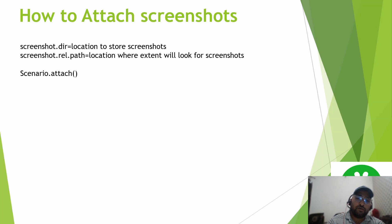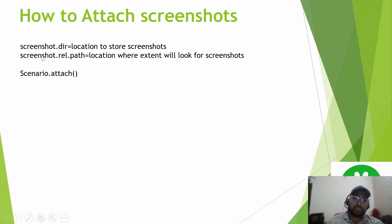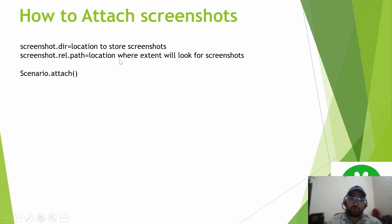Once we have taken the screenshot, the next step is to store it somewhere locally. For that purpose we need to provide a particular parameter in extent.properties: screenshot.dir. And secondly, once the screenshot is stored locally, we need to provide the physical location. That physical location is provided using screenshot.rel.path. This is how it works.